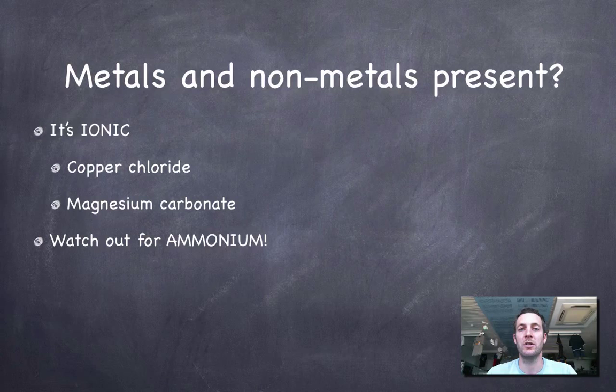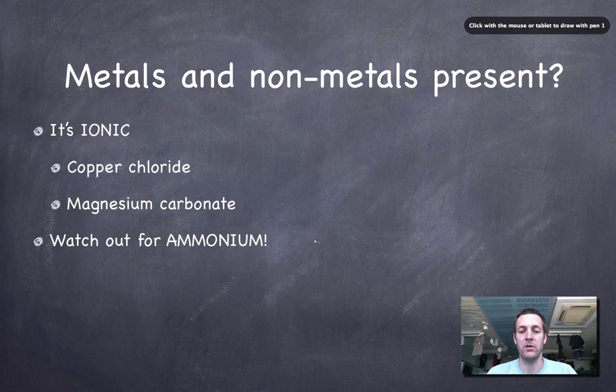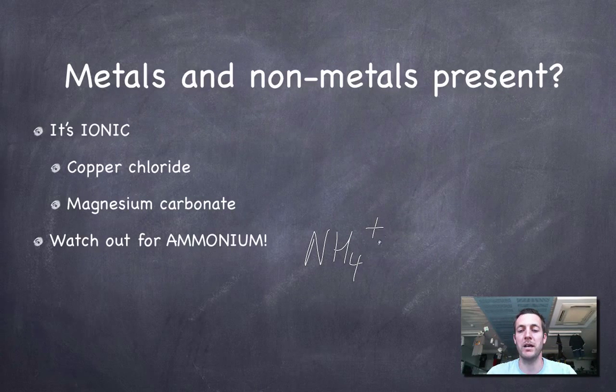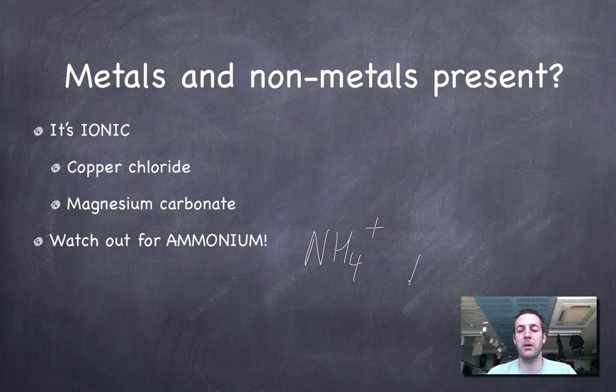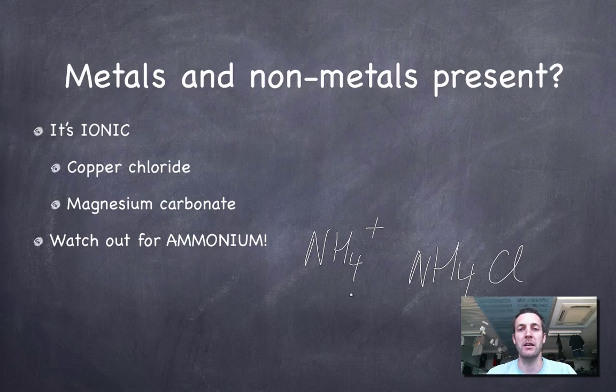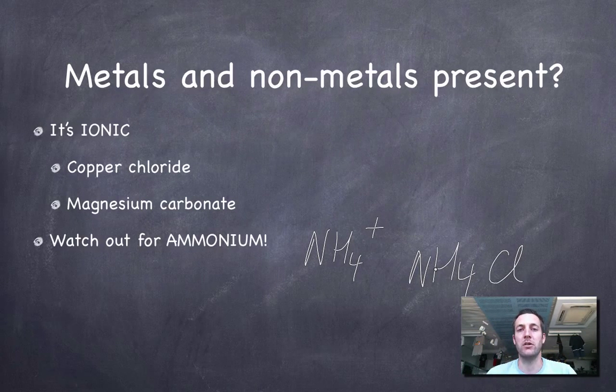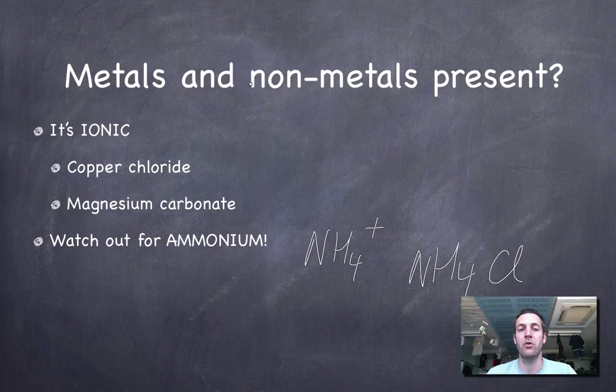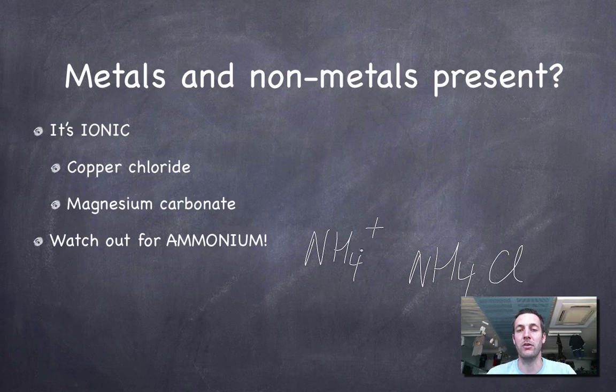Watch out for the ammonium ion, which we said before has the formula NH4+. So things like ammonium chloride, which don't appear to have a metal in, are still ionic. So any metal and non-metal combination, or any ammonium ion and non-metal combination, will be an ionic substance.